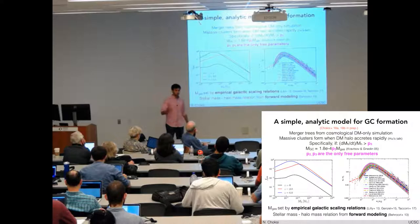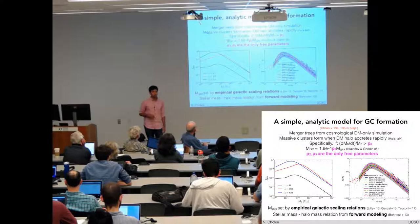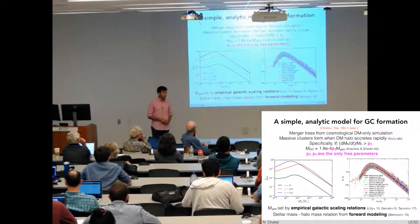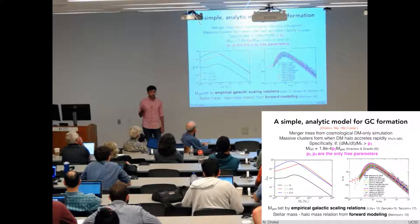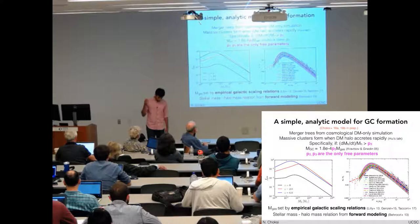I'm going to take dark matter merger trees, just simple dark matter merger trees. We use ones from Illustrious's dark matter only run, doesn't really matter what you use. And then make a simple ansatz, which is motivated both in Hwei's simulations, as he showed, and also in observations of young massive clusters in the nearby universe. I'm just going to assume that massive bound clusters form when a dark matter halo is accreting very rapidly. These are often major mergers, but it doesn't have to be.